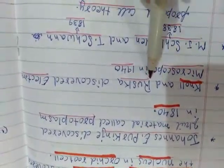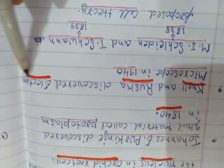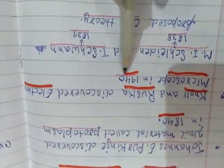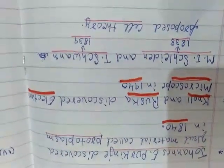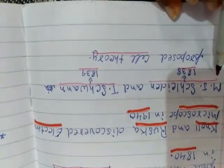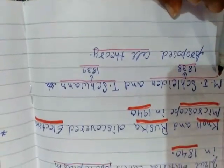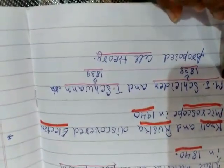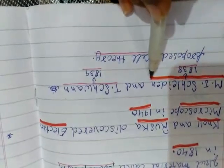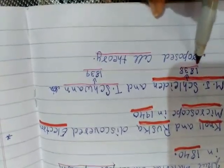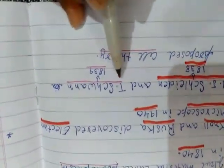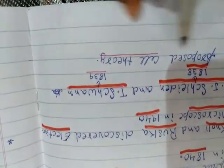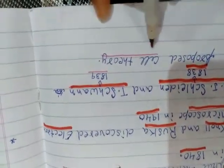Noll and Ruska discovered the electron microscope in 1940. And the last point of the history: M.J. Schleiden in 1838 and T. Schwann in 1839 proposed cell theory.